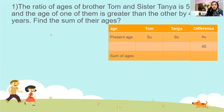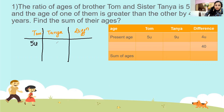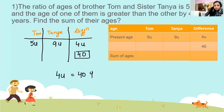So the question says: the ratio of age of brother Tom and sister Tanya is 5 to 9. So we have Tom and Tanya, and then we will have a Difference column — three columns: Tom, Tanya, and Difference. Tom is 5 units, Tanya is 9 units, so the difference is 4 units. The age of one of them is greater than the other by 40, so this difference is given as 40. That means 4 units equals 40.